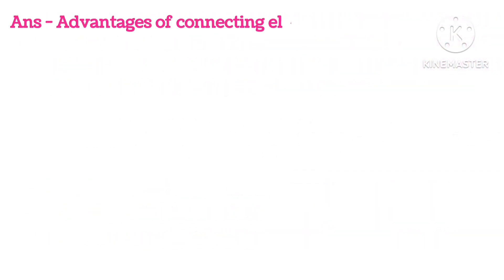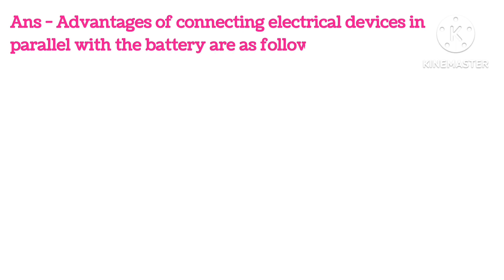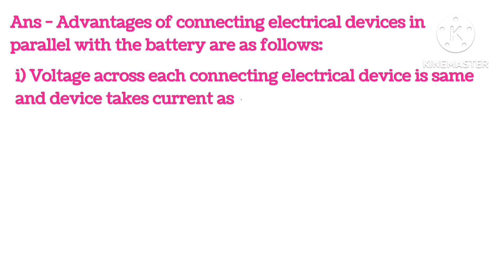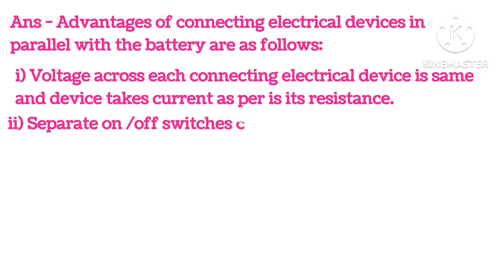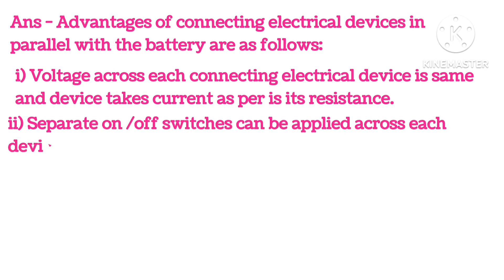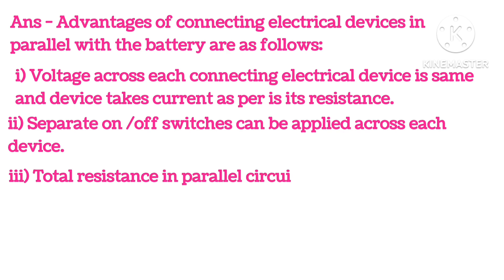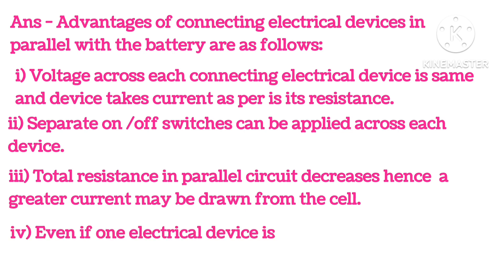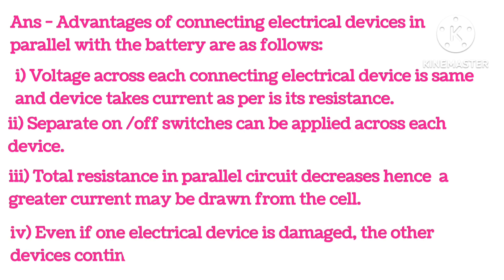What are the advantages of connecting electrical devices in parallel with the battery instead of in series? First, the voltage across each device is the same. Second, separate on/off switches can be applied to each device. Third, total resistance in a parallel circuit decreases, so greater current can be drawn. Fourth, even if one device is damaged, the other devices continue to work properly.